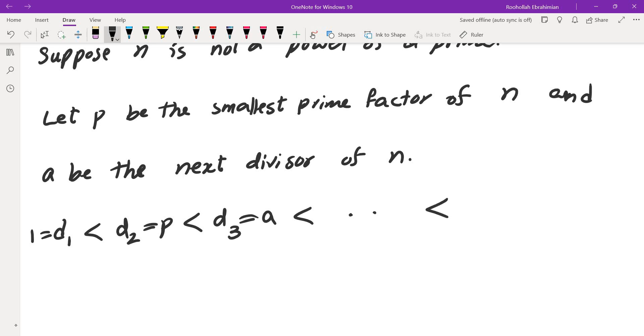So if I look at that, the last divisors are going to be dₖ, which is n. The divisor right before that would be n over p. This is dₖ₋₁, and the divisor right before that would be n over a, which is dₖ₋₂. So these are going to be the divisors.